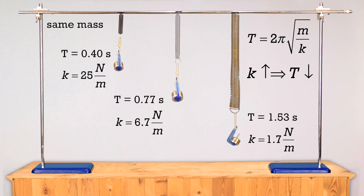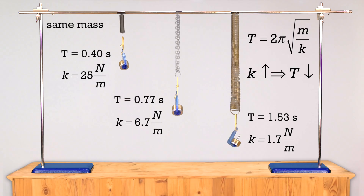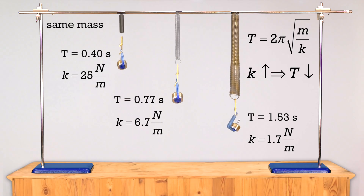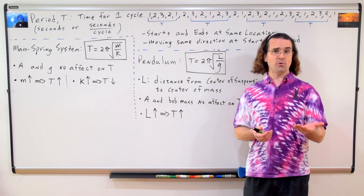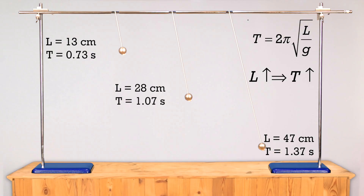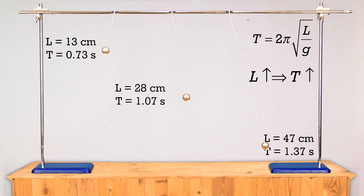Kevin, what happens to the period of a pendulum if we increase the distance between the center of suspension and the center of mass of the pendulum? L, the pendulum length, is on the top of the fraction, so an increase in the pendulum length will increase the period of the pendulum. Correct. The longer the distance between the center of suspension and the center of mass of the pendulum, the longer it takes for the pendulum to go through one full cycle.